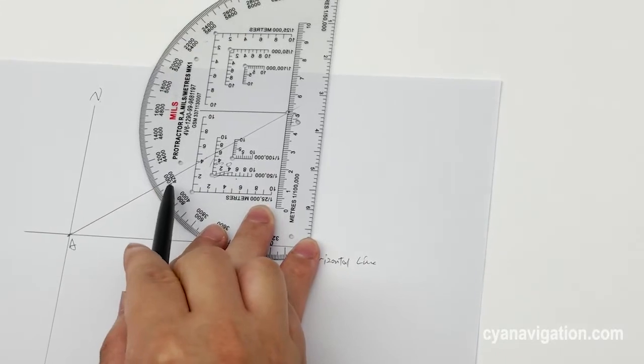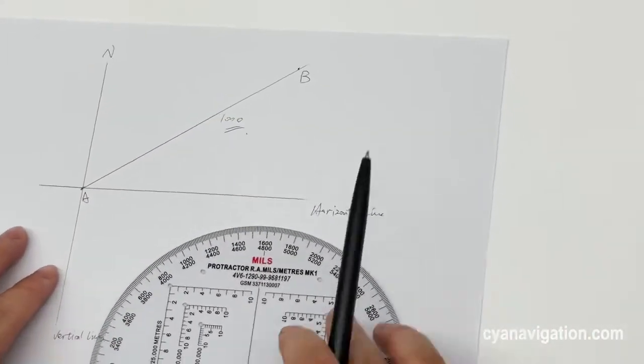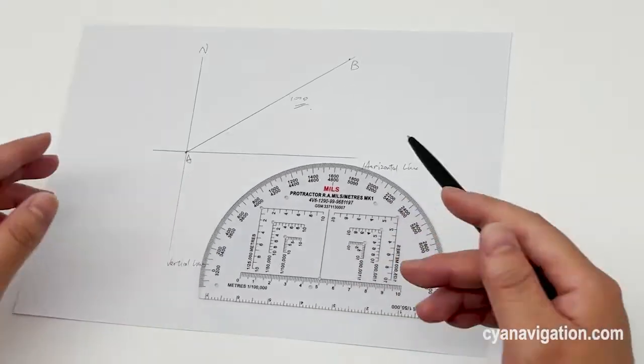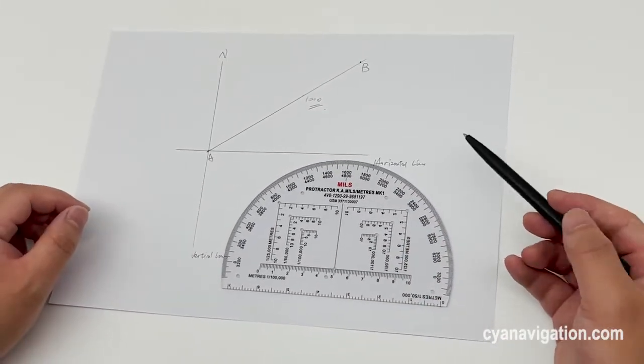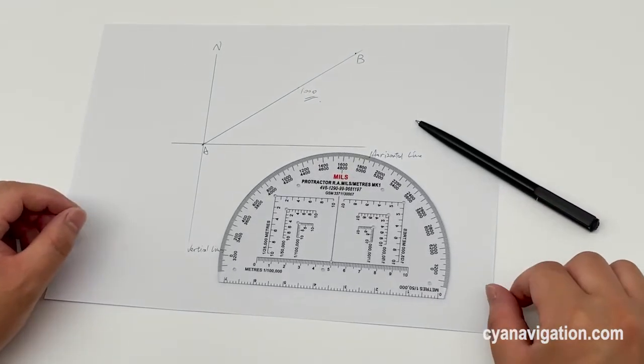So the grid bearing from point B to point A will be 280. Okay, this is our answer. Hope it will be helpful for your reference. Thank you.